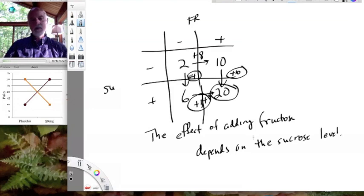In other words, we can't predict what the effect of adding fructose will be without knowing the level of sucrose. And it's vice versa. It's symmetrical, okay? So that's the meaning of interaction. It is that we have to know the levels of both factors in order to be able to predict the outcome because the effect of adding one depends upon the level of the other, alright?